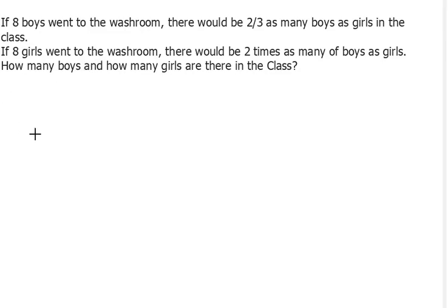Hi everyone, this is one of the problems submitted by one of the viewers, so let's go straight to the problem. If 8 boys went to the washroom, there would be two-thirds as many boys as girls in the class. Whenever it comes to two-thirds as many boys as girls, you always take the two for the boys (two units) and three for the girls (three units).